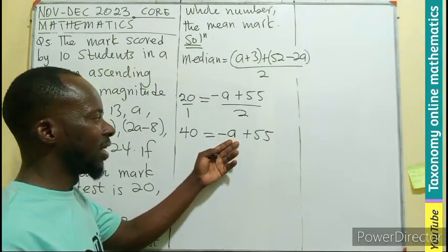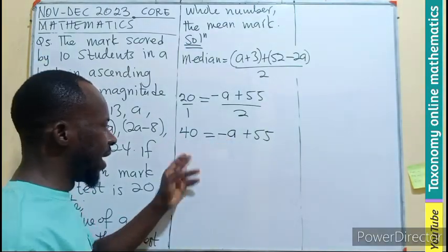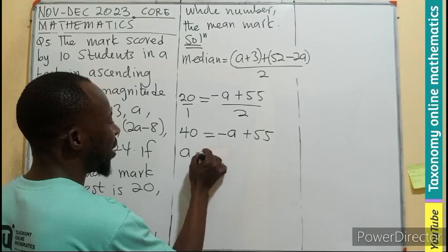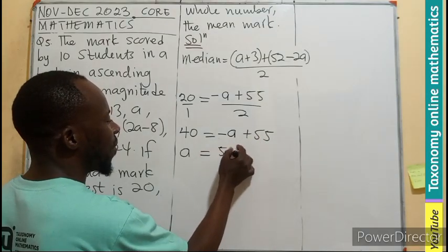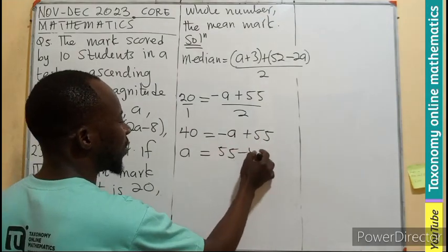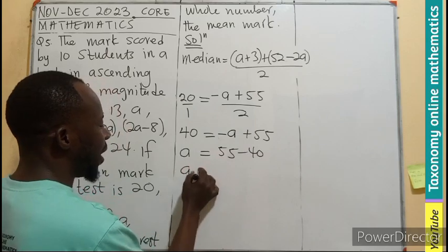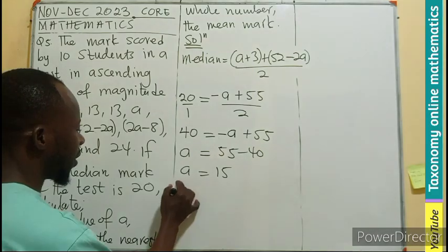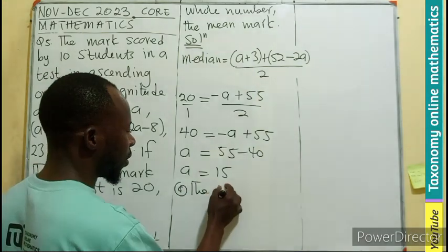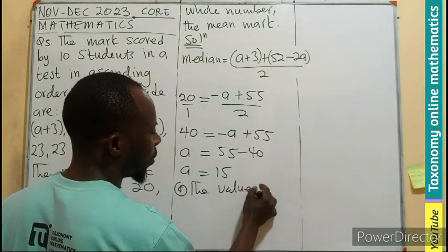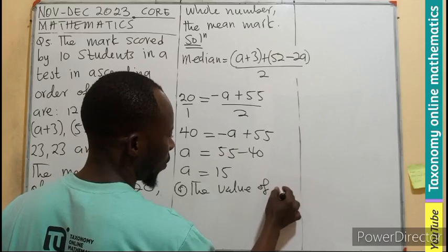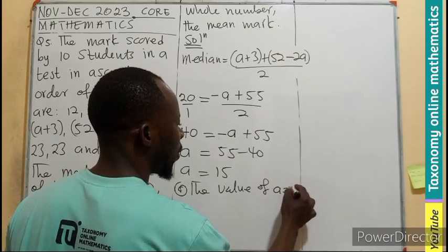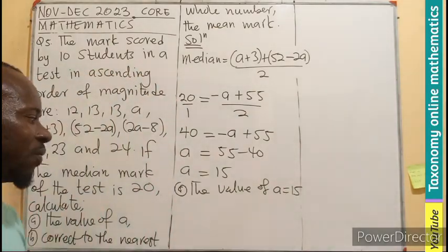Now let's bring the negative A here to become positive A. Maintain your 55 minus 40. Meaning A is going to be 15. So the value of A is going to be 15.